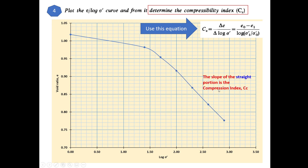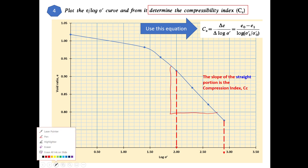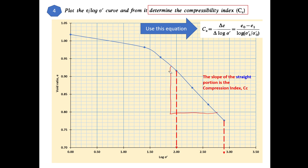The slope of the straight portion is the compression index — the slope of the straight portion is the compression index. By calculation, we need to identify any two points on the straight portion. It does not have to be exactly the points shown; you can use any points. I am using points that already have data values in the table.